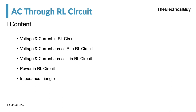We will start with voltage and current in the RL circuit — the total voltage and current. Then we will cover voltage and current across only the resistance, then across only the inductor in the RL circuit. After that we will talk about the power situation in the RL circuit, and finally discuss the impedance triangle, which is an important term in AC circuit analysis.